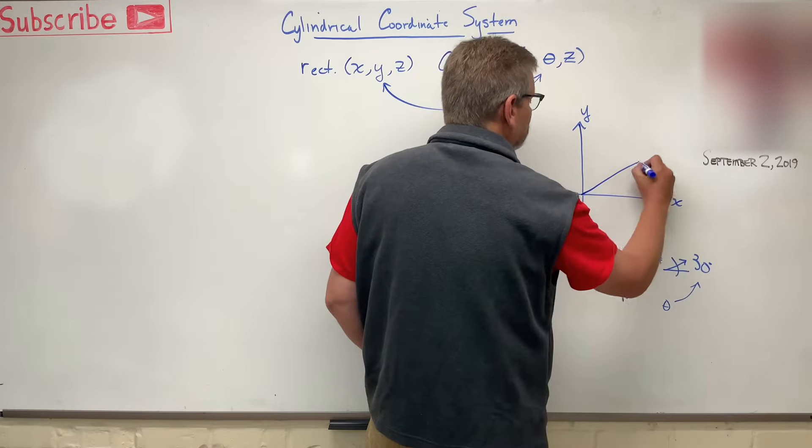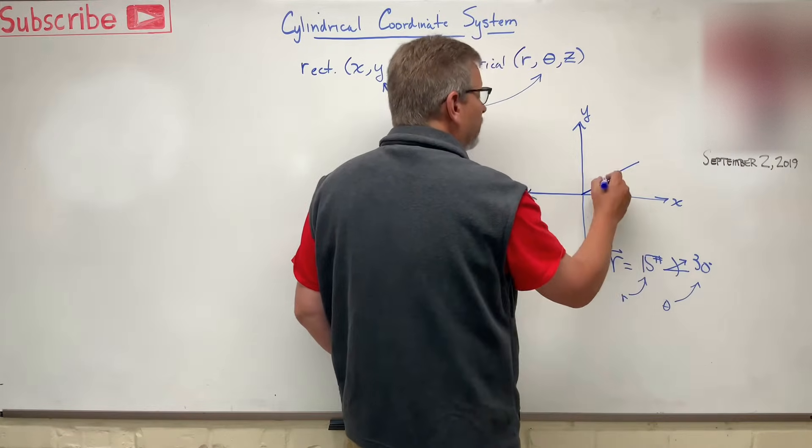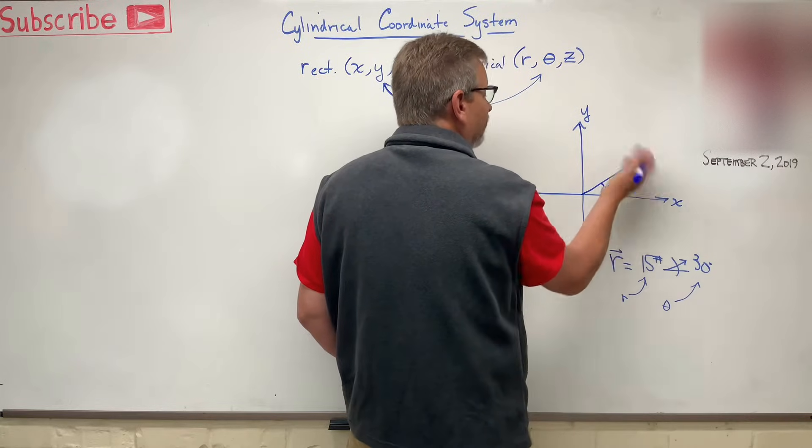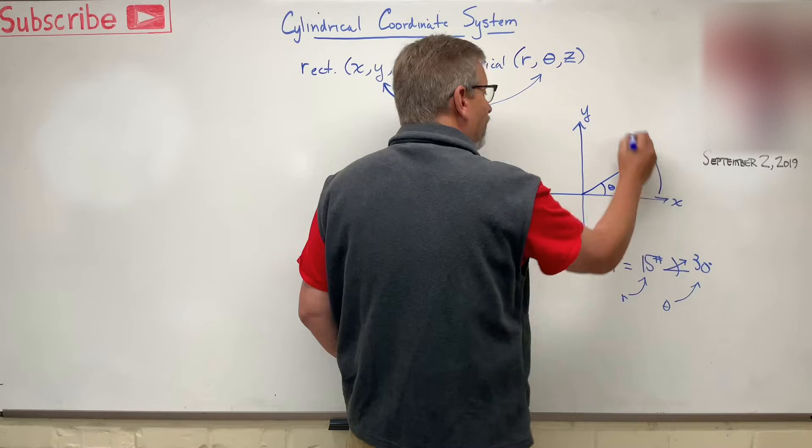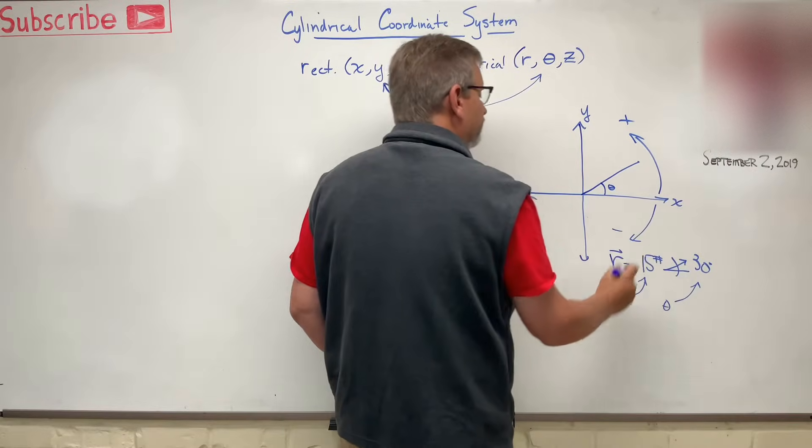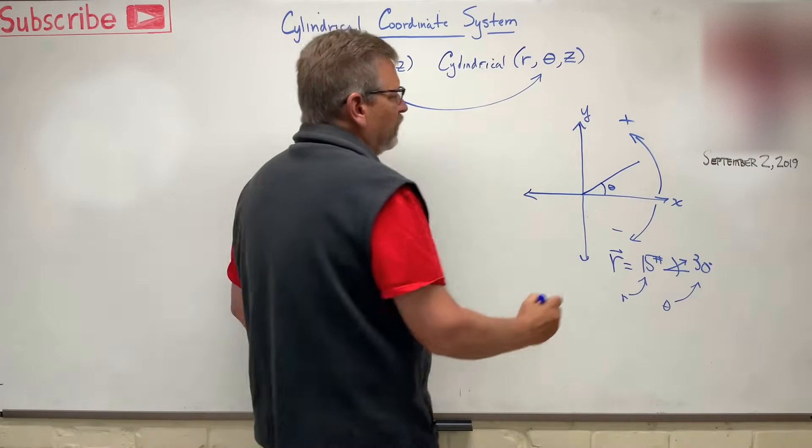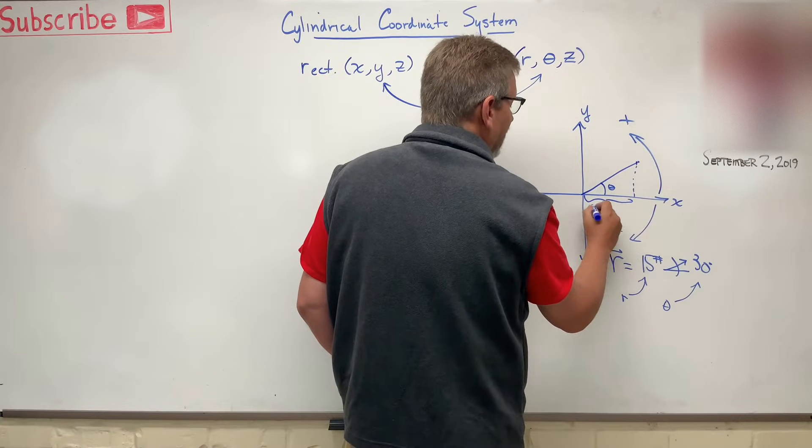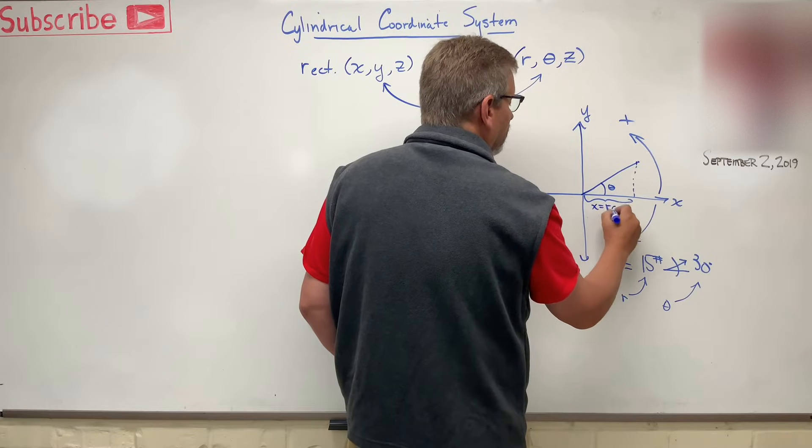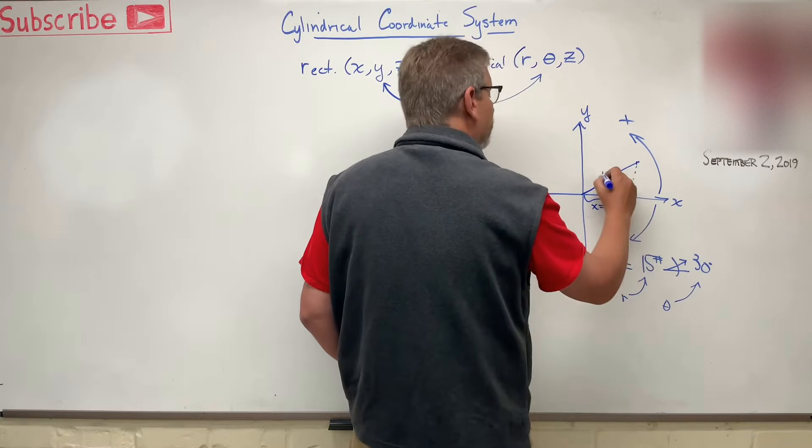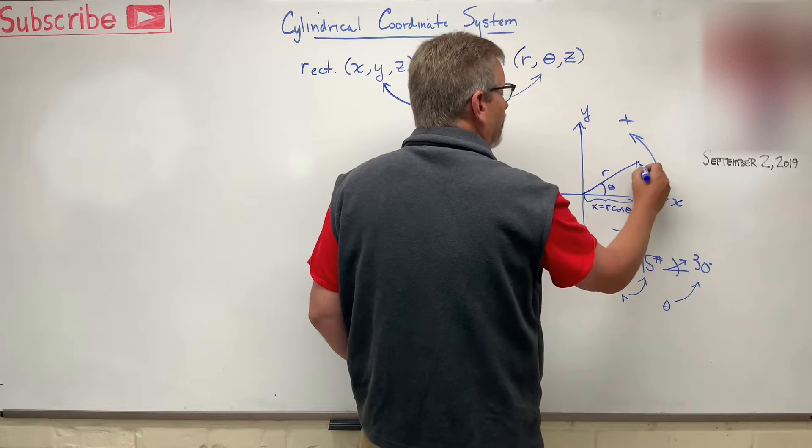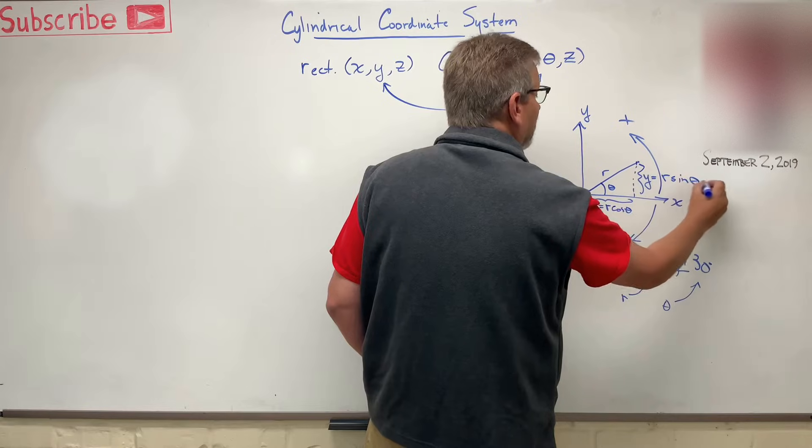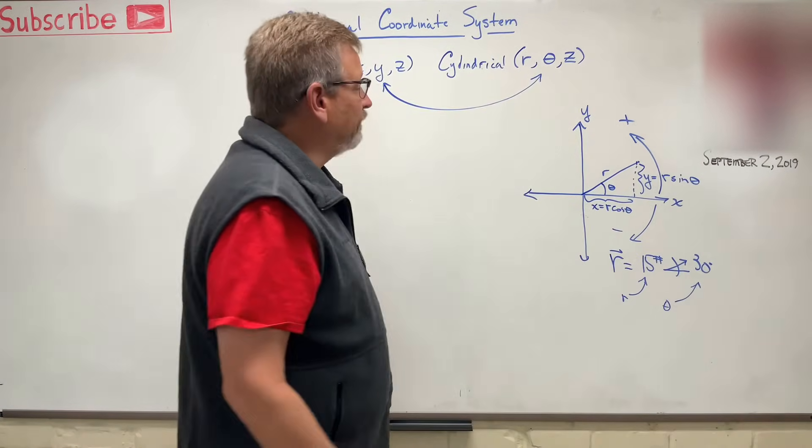So if we have some vector of some distance r, and then theta was here. Theta is always measured from the x-axis, and of course we remember that this is positive, and this is negative. And so this guy had two components to him. Here we had, for the x component, we had r cos theta. And then for the y component, which is here, we had y is equal to r sine theta. Easy, right?